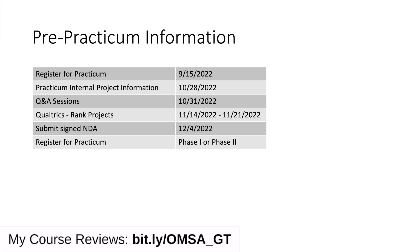The first email I ever got was the register for practicum email, which I got on September 15th. When you register for the practicum, you have the option to choose between internal or company sponsor. I chose the internal, which is why I got the second email sent to me on October 20th. This was a very detailed email with all the information you need to know about the projects, including a document showing all the projects available for that given term and their summaries. That email also mentioned that the Q&A session for those projects starts on October 31st of 2022.